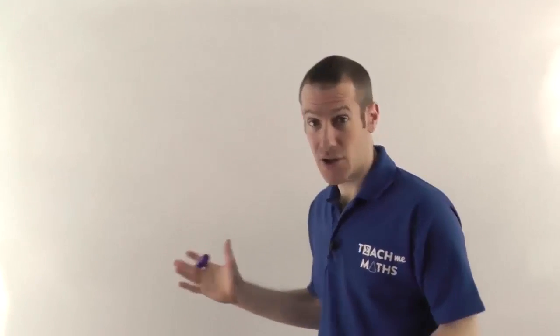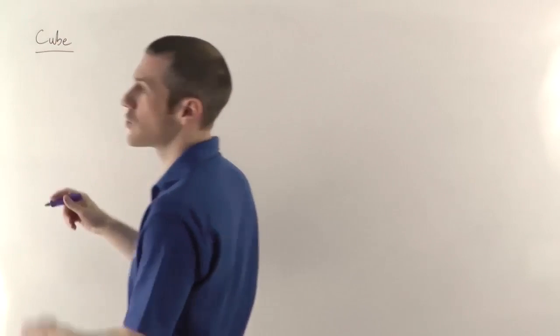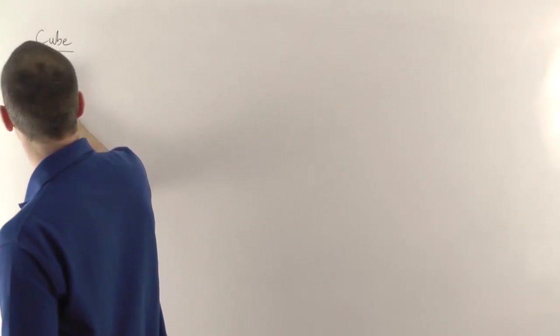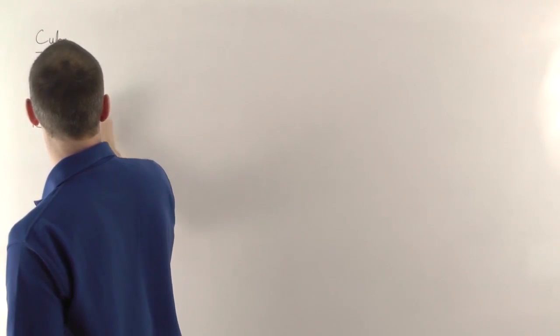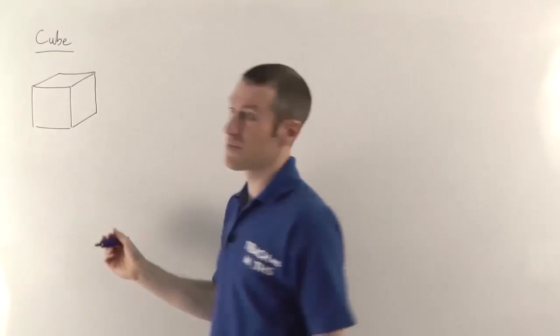So the first one we'll look at is a cube. Now a cube is like a square that's been stretched back into 3D. So if we draw a square first of all, then you have to extend it back into 3D. So it looks something like that.